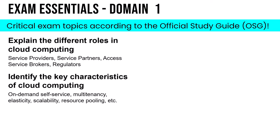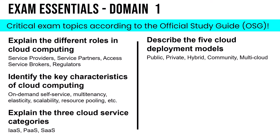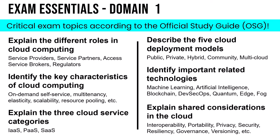The exam essentials also include explaining the three cloud service categories — IaaS, PaaS, and SaaS — and the differences between them; describing the five cloud deployment models: public, private, hybrid, community, and multi-cloud; identifying important related technologies like machine learning, AI, DevSecOps, and quantum; and finally shared considerations in the cloud such as interoperability, portability, privacy, and resiliency. I'll also give you a tour of the shared responsibility model for cloud.